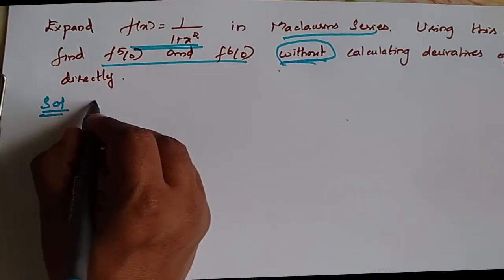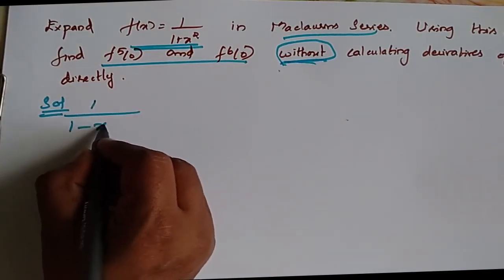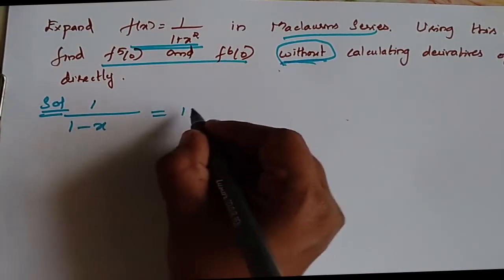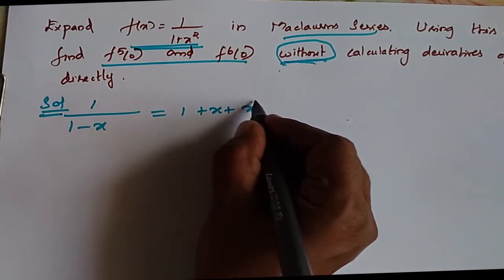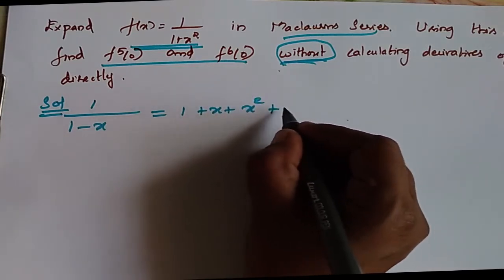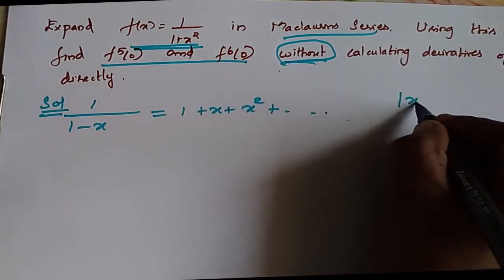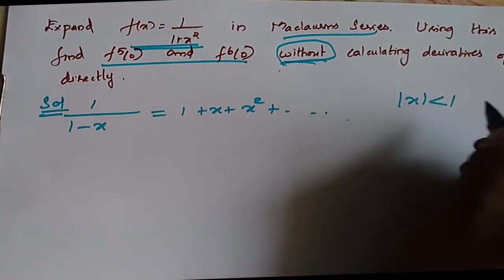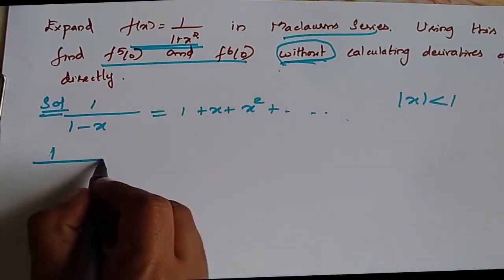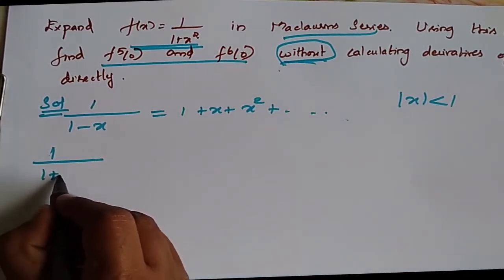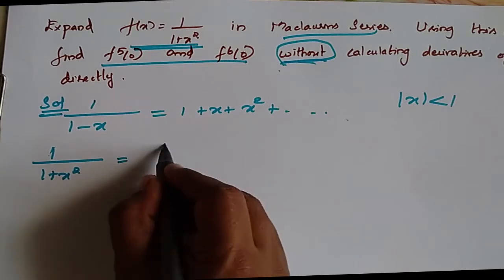The solution uses the known series: 1/(1-x) = 1 + x + x² + ... where |x| < 1. Now, substituting x with -x² gives us 1/(1+x²).